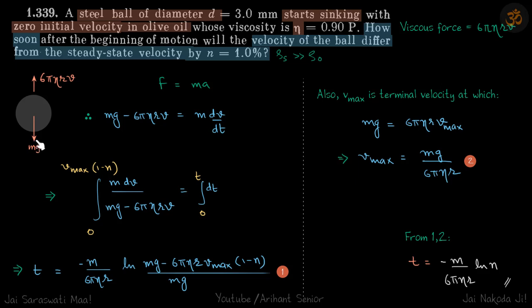When that happens the net force on the ball is zero and that is the maximum velocity this ball can have, which is also called as terminal velocity or in this case steady state velocity. So after that the velocity does not change and net force is zero.